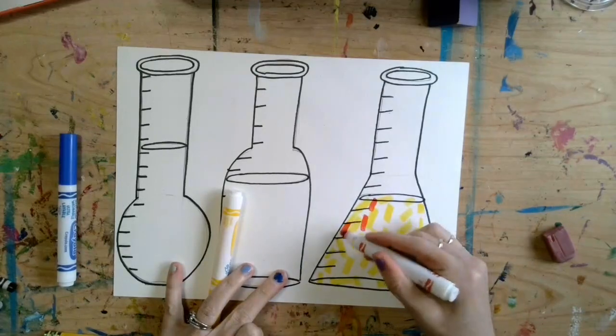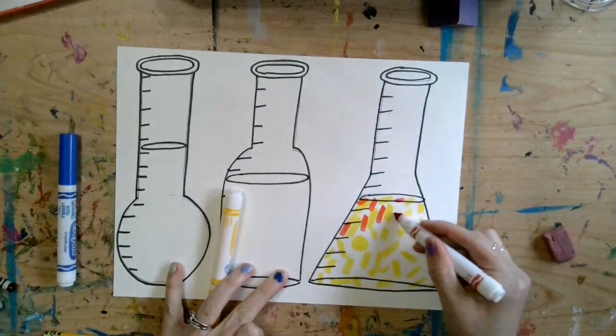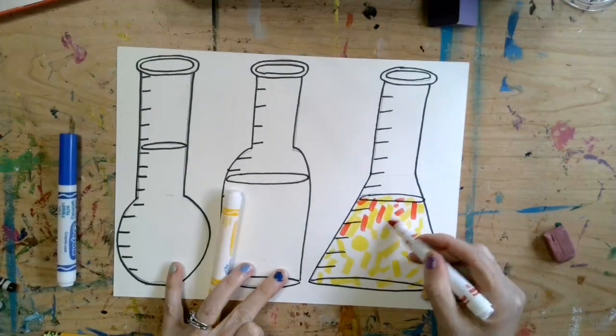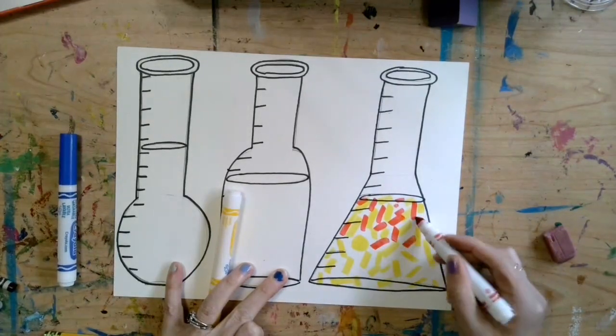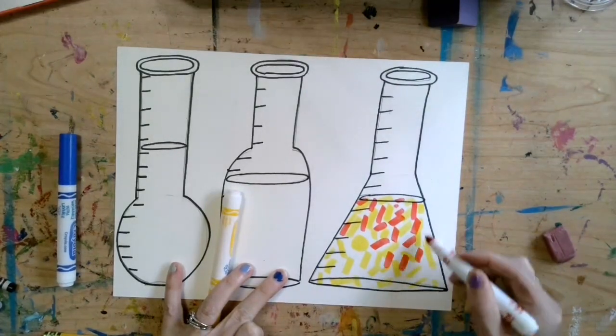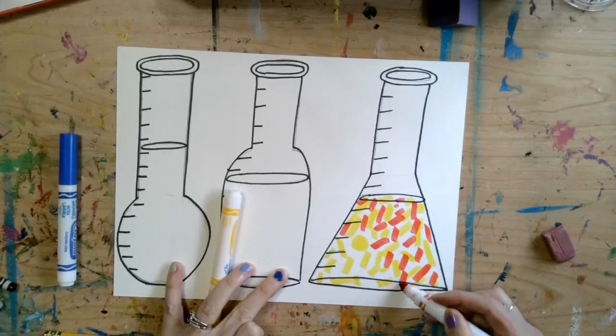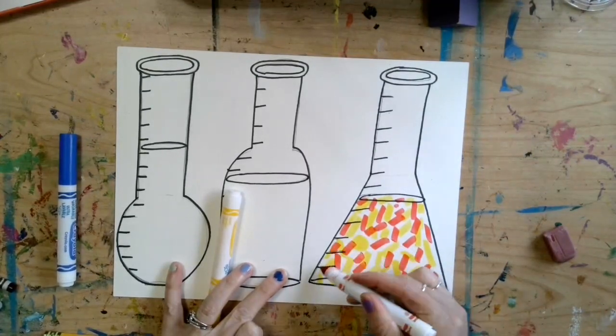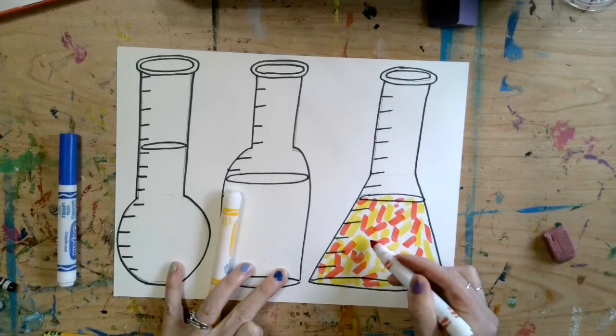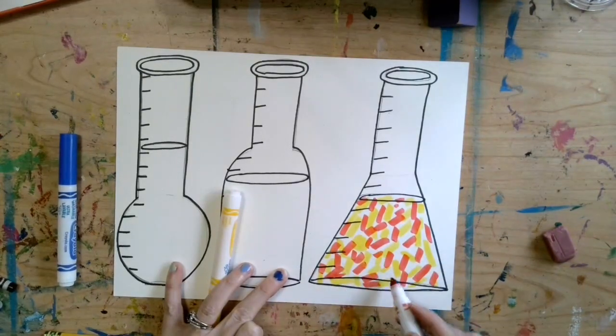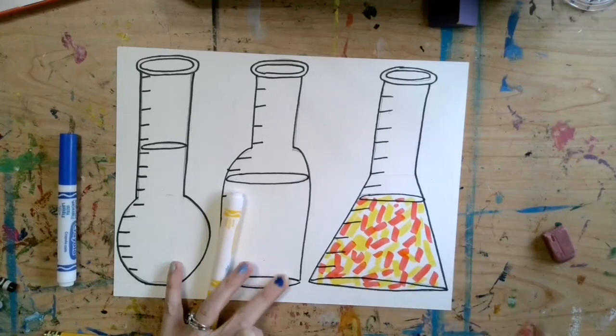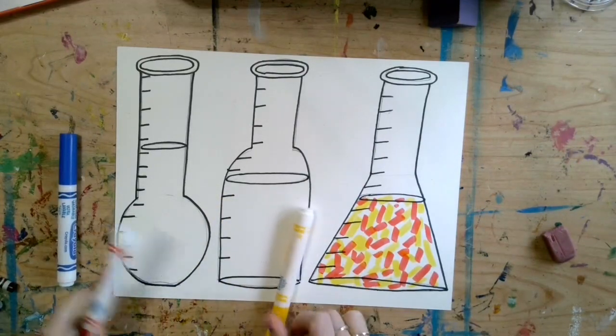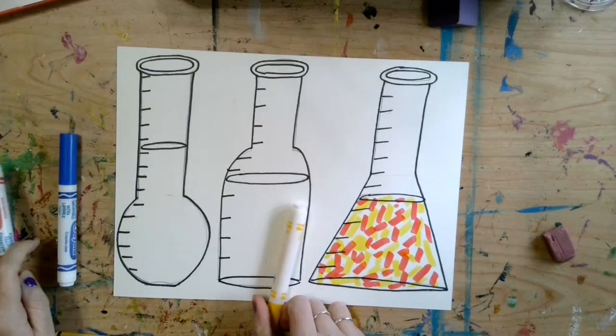Now I'm going to add in my red. So think in your head, do you know what secondary color you're going to get when you mix red and yellow together? And you're going to find out in a few minutes. So I'm just kind of filling in the rest of that white area. There's still some white spots showing but I'm trying to evenly have the same amount of red and yellow in there.